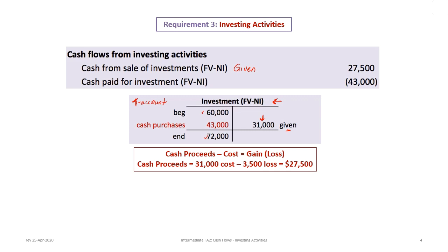Through the process of reconstructing the T-account, we can determine that cash purchases had to be $43,000. The $27,500 cash from sale of investment can also be verified using the disposal formula: proceeds minus cost equals gain or loss. With a $31,000 cost and a $3,500 loss on sale from the income statement, that proves the cash from sale of fair value net income investments is $27,500. So it doesn't have to be given, but in this case it is.